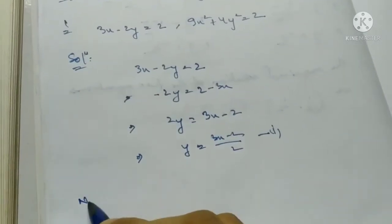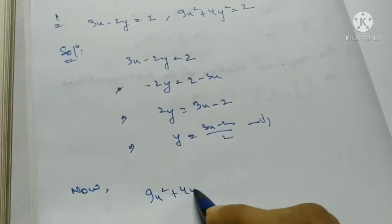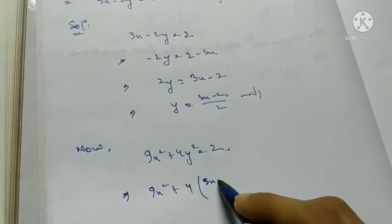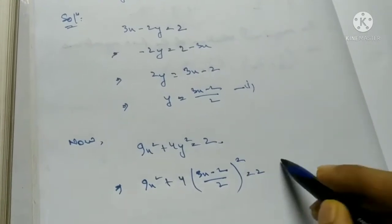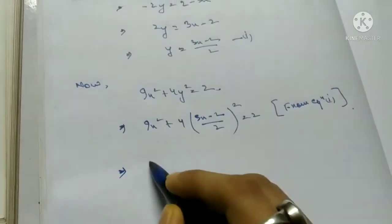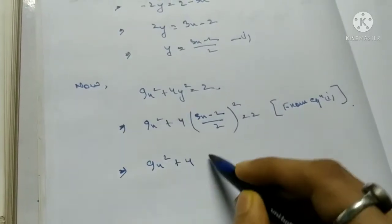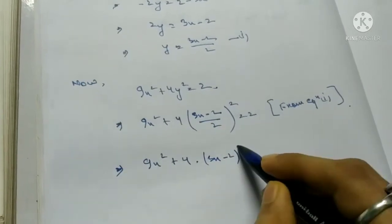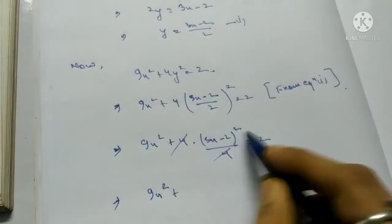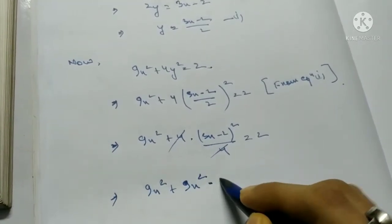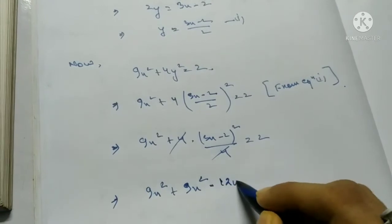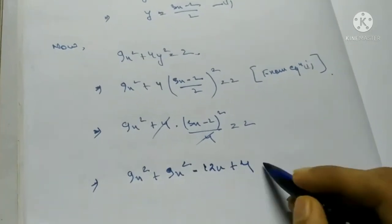Now substituting into 9x squared plus 4y squared equals 2: put y equals (3x minus 2)/2 from equation 1. This gives 9x squared plus 4 times (3x minus 2)² divided by 4 equals 2. Expanding: 9x squared plus 9x squared minus 12x plus 4 equals 2.